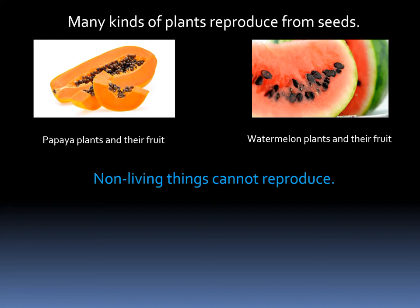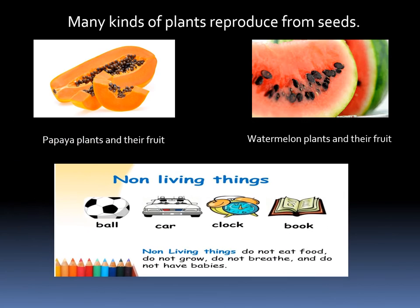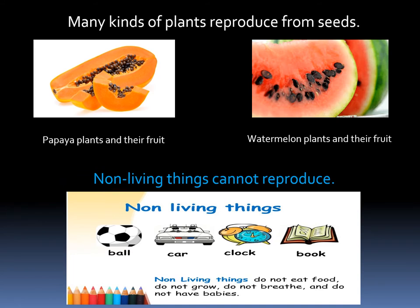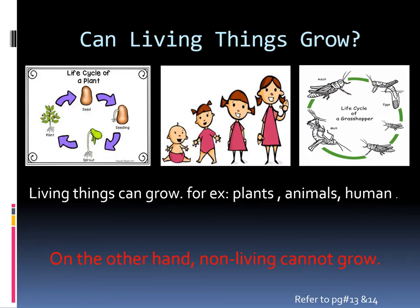Both seeds are different in shapes and colors. Now, non-living things cannot reproduce. Examples of non-living things are: car, ball, clock, and book. Non-living things do not eat food, do not grow, do not breathe, and do not have babies.